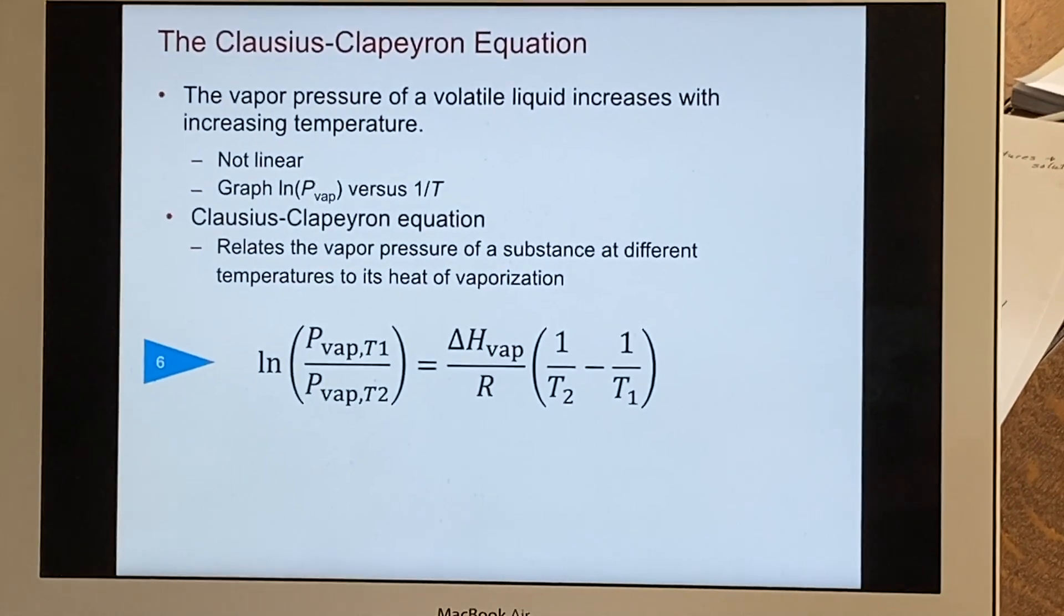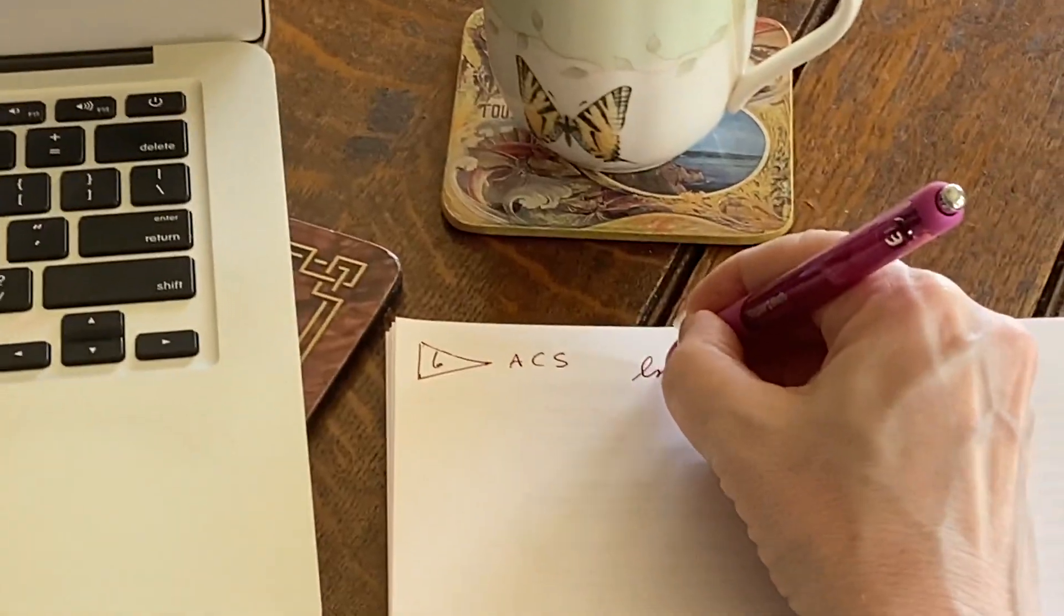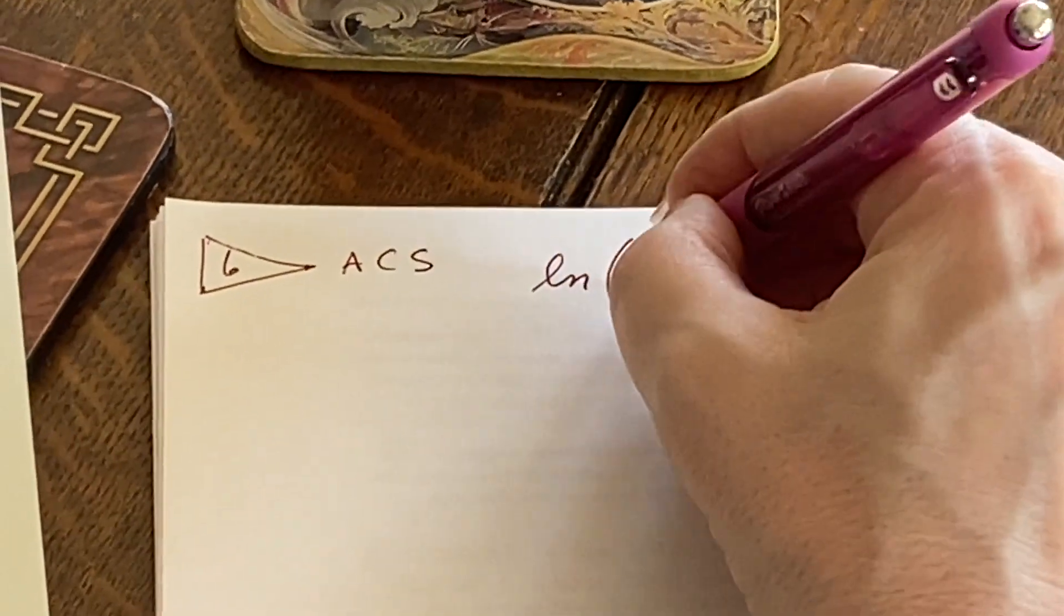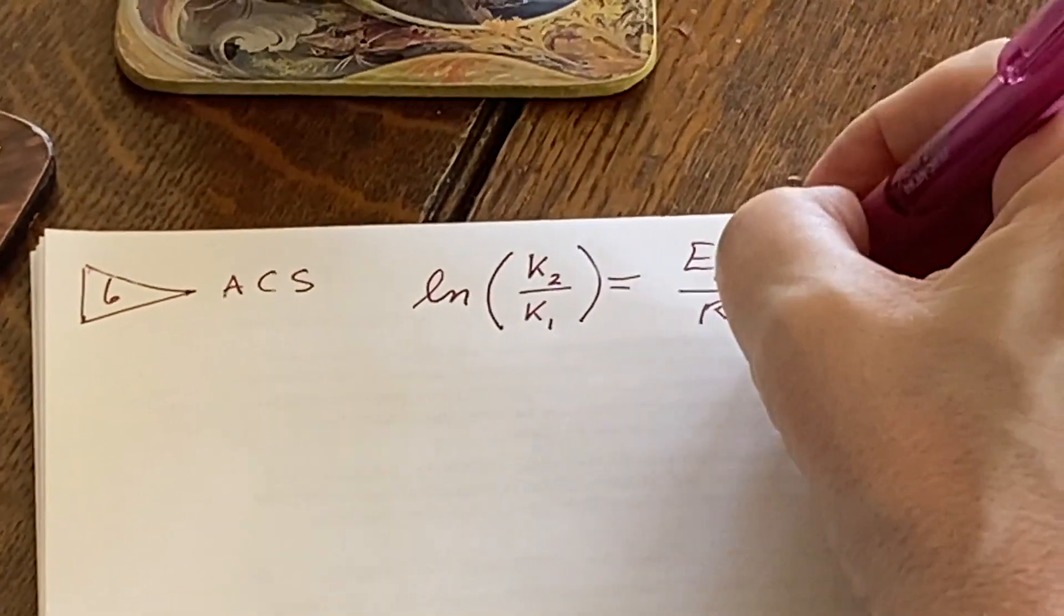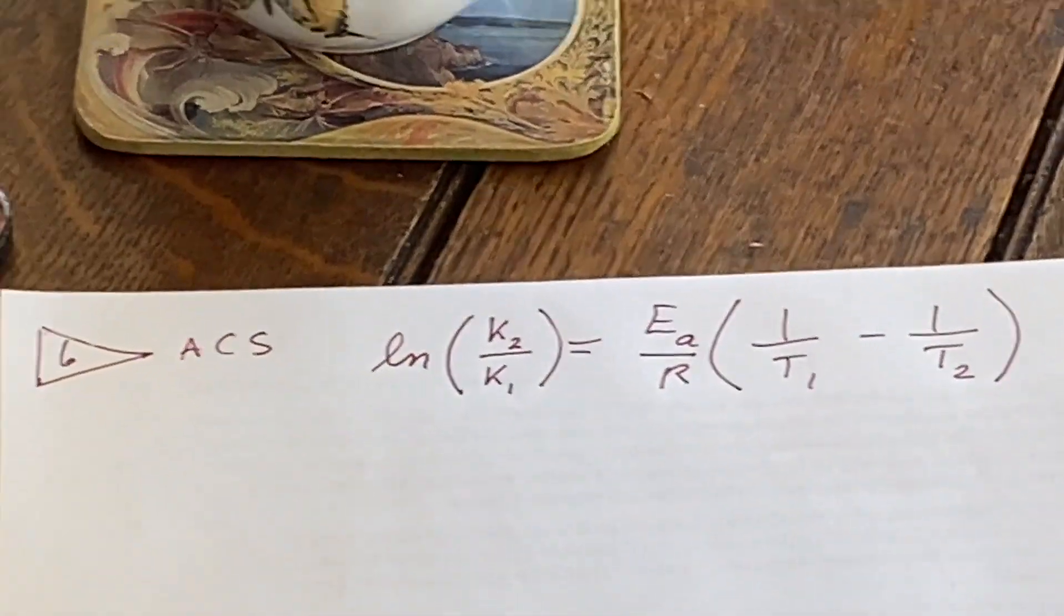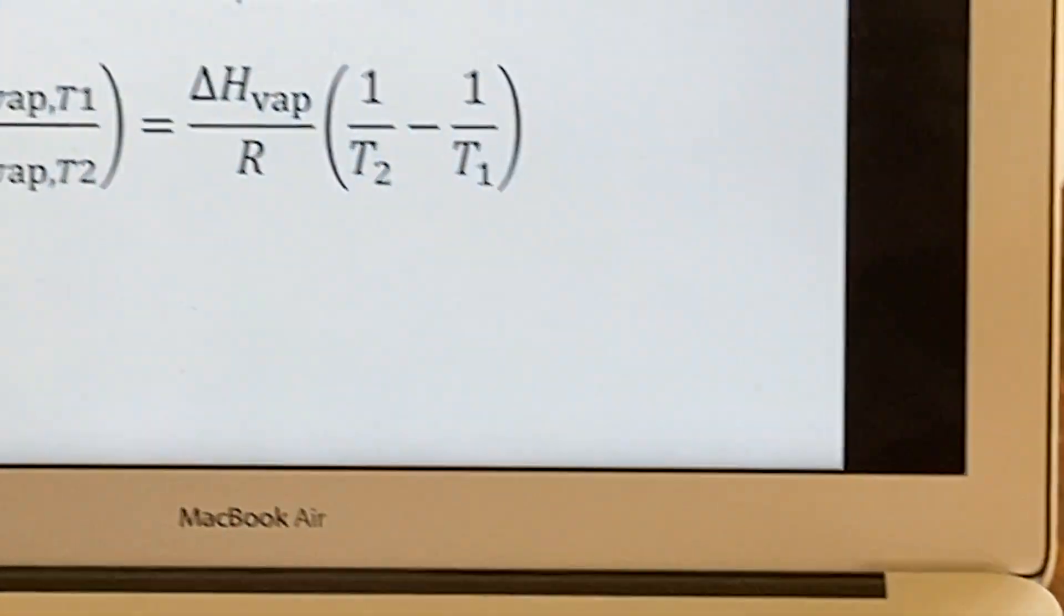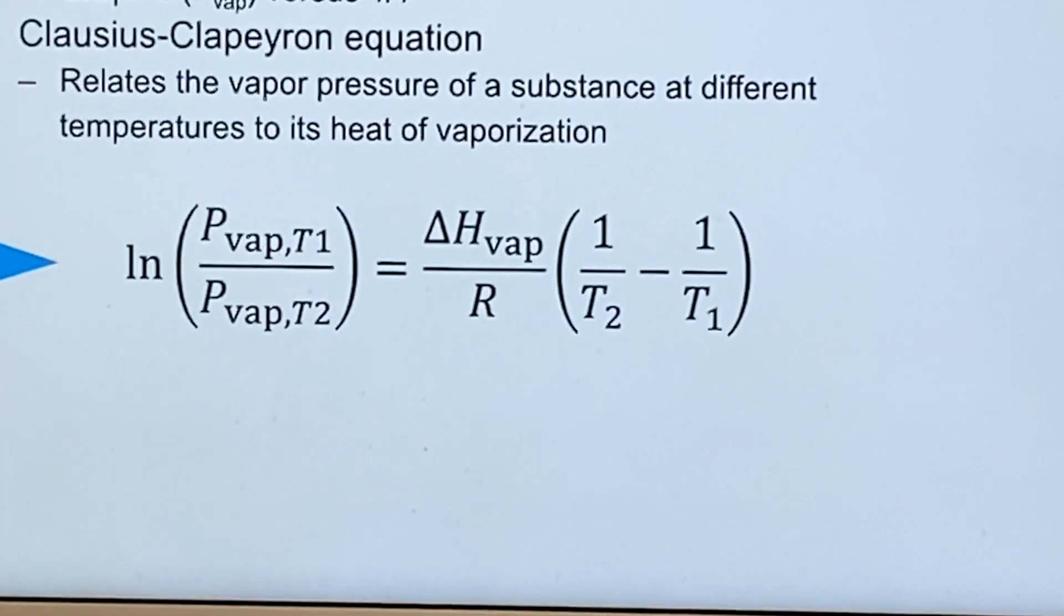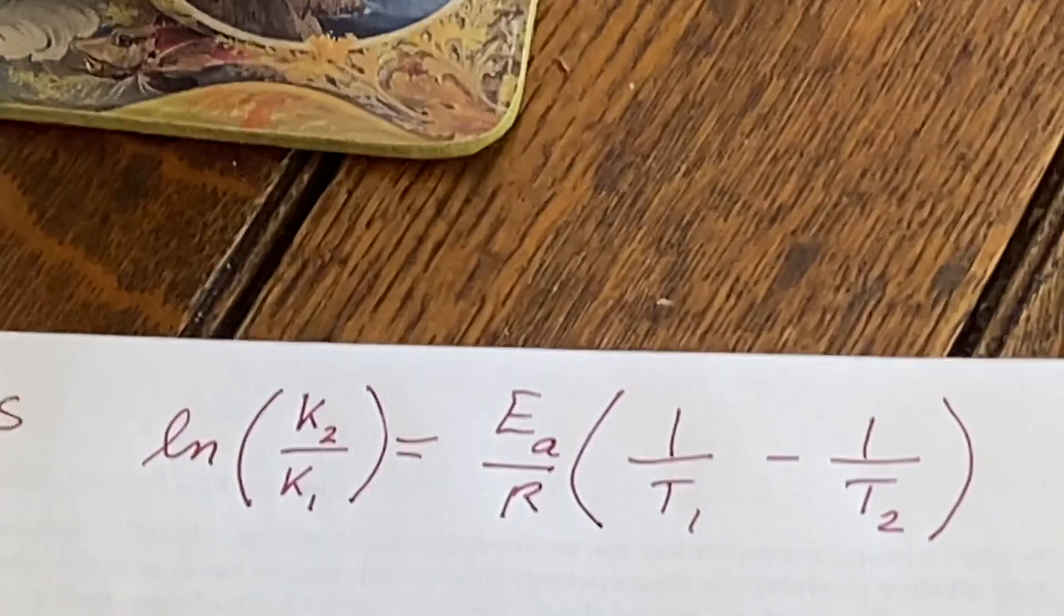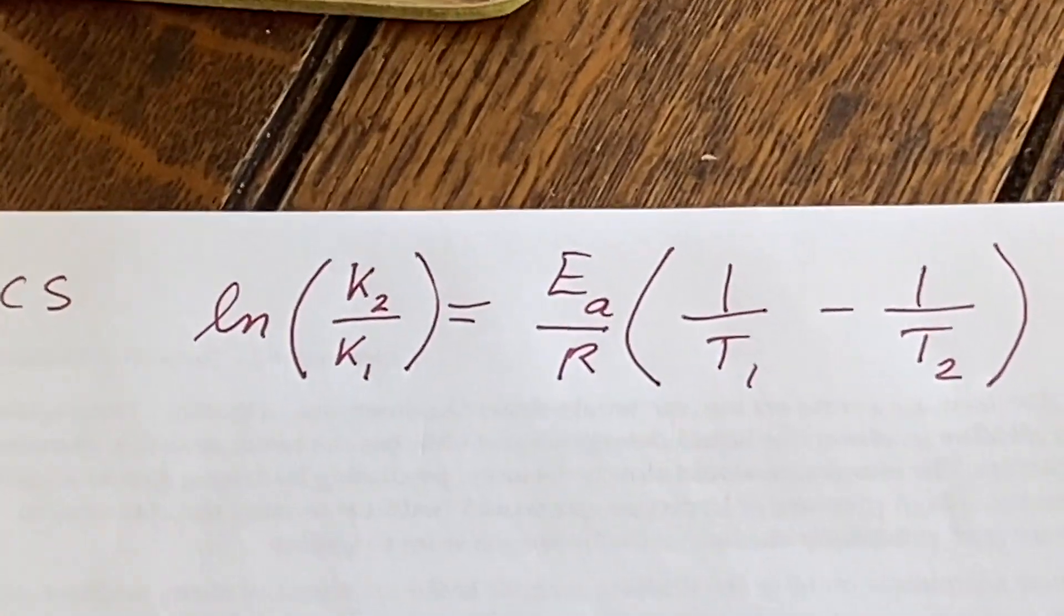It gives you a related equation, which is something we'll come across again in a different chapter. You can see it has the same form, but it is somewhat different. It is a more general equation called the Van't Hoff equation, and we'll examine that in chapter 14.